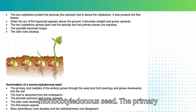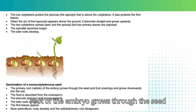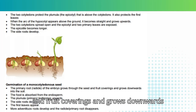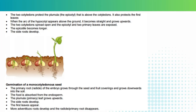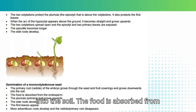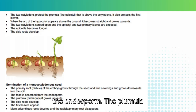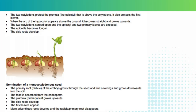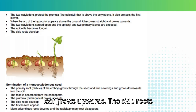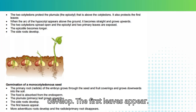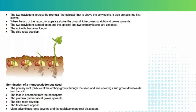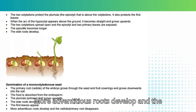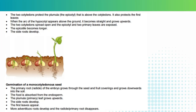Germination of a monocotyledonous seed. The primary root, or radicle, of the embryo grows through the seed and fruit coverings and grows downwards into the soil. The food is absorbed from the endosperm. The plumule, or primary leaf, grows upwards. The side roots develop, the first leaves appear, more adventitious roots develop, and the radicle or primary root disappears.